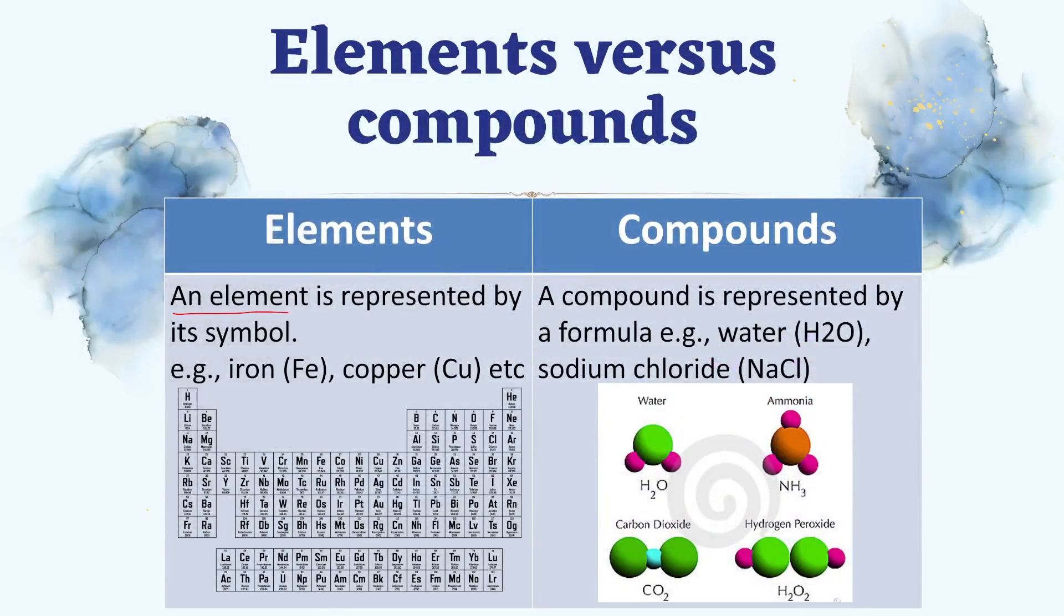Isi tarah, agar hum element ko dekhen, toh we represent the elements with different symbols, jinko hum ne seekha tha. For example, iron ho gaya, copper ho gaya and these symbols are arranged in the periodic table instead of complete names.